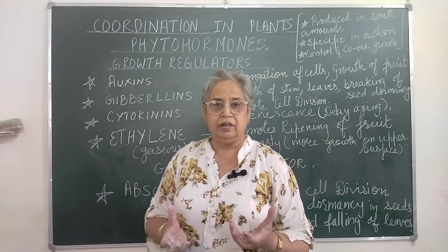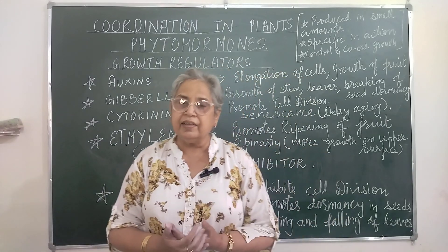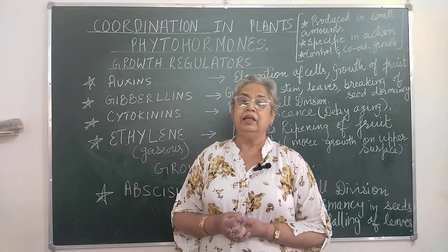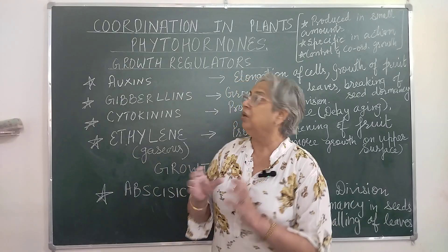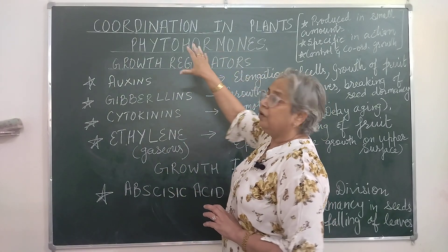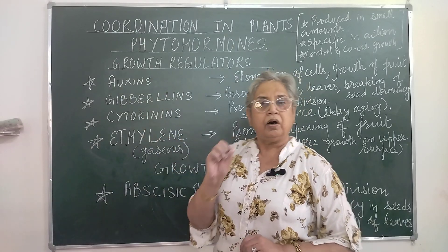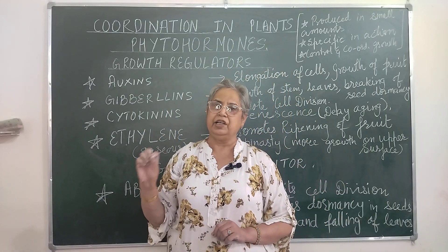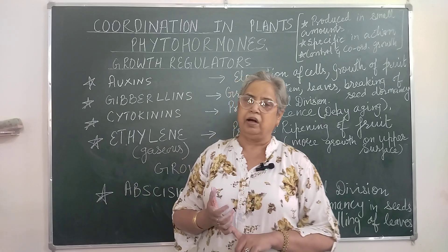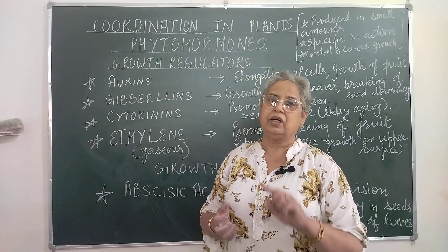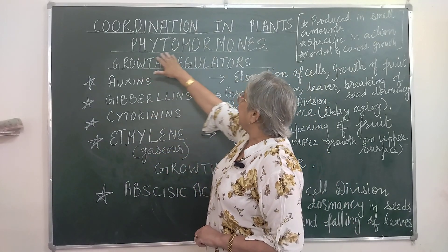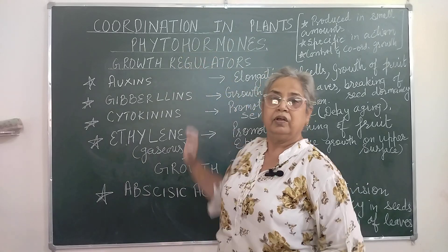So what is auxin? Auxin is a chemical — it is a chemical in nature called a hormone. Now, hormones are part of chemical coordination in animals as well as in plants. Hormones which are plant-related are called phytohormones.